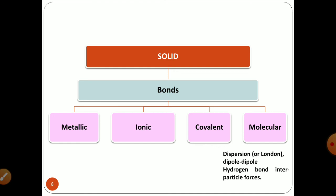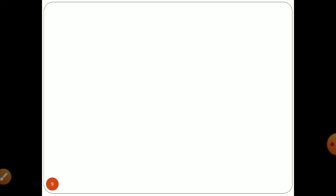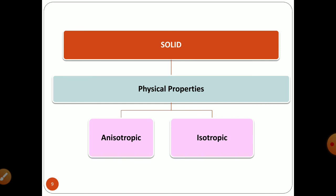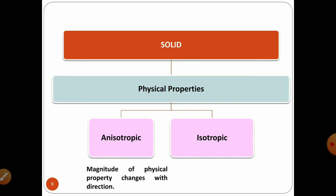Common examples for molecular solids include ice and dry ice, such as CO₂. The next class to classify solids is on the basis of physical properties. Based on physical properties, solids are classified as anisotropic solids and isotropic solids. Anisotropic solids are substances in which the magnitude of physical properties — like refractive index, strength, conductivities, etc. — changes with direction.